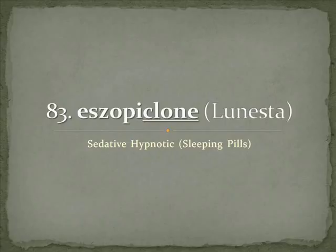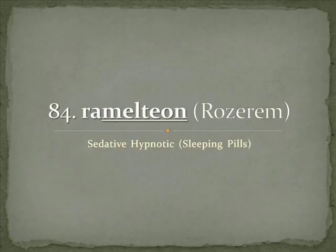The next one is very similar — we want to look at the brand name instead of the generic to remember what it's for. Rozerem: 'Rose' and 'doze' go together, and then 'rem' for REM sleep. Melteon is a stem, but it doesn't necessarily help us when there aren't a lot of other drugs in the class.